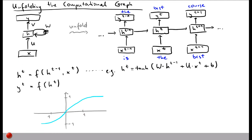For the output y(t), one common choice when predicting words from a vocabulary is y(t) = softmax(V·h(t) + c), where V is another weight matrix and c is a separate bias term distinct from the bias used for the hidden layer.